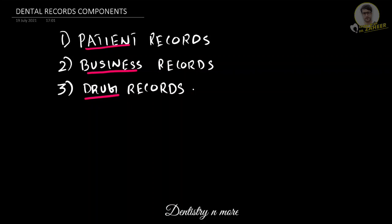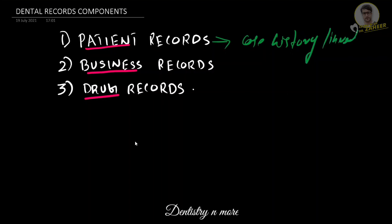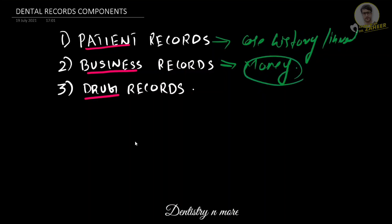What are the components of a dental record? It should have the patient's details — that is, the case history and all related information discussed previously, including investigations. The second component is the business record, which includes all financial information. The third component covers drugs — what medications are prescribed, how many drugs the patient has taken, and all related details should be thoroughly documented.